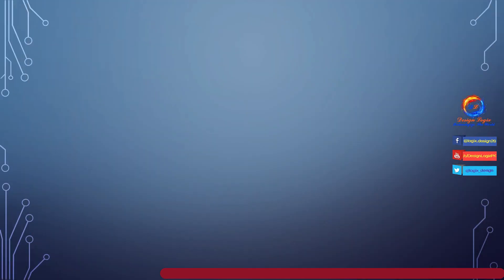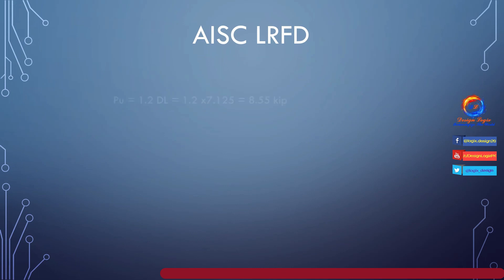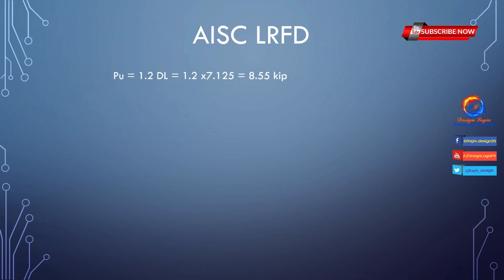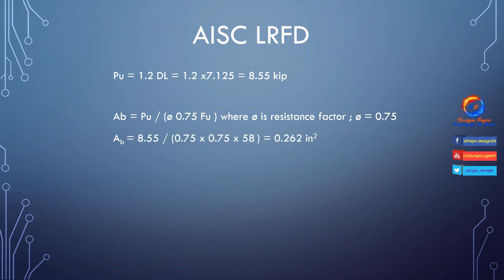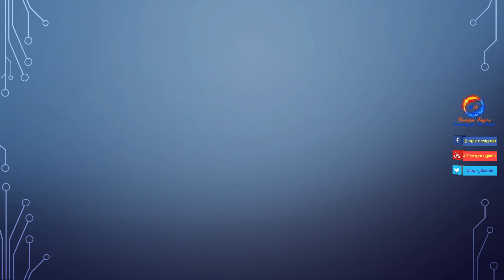Now let's design the cable using AISC LRFD and AISC ASD codes. For AISC LRFD, first calculate the ultimate tension force: Pu = 1.2 × Dead Load. To find the required cable area: Ab = Pu / (φ × 0.75 × Fu), where φ = 0.75 (resistance factor in LRFD). Using A36 grade steel, Fu = 58 ksi. Substituting all values gives Ab = 0.262 square inches. A number 5 cable has area 0.306 square inches, so use a 5/8 inch diameter cable.